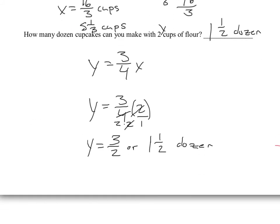The last question asks how many dozen cupcakes you can make with two cups of flour. Cups of flour is our X, so I substitute two in for X: Y equals three-fourths times two. Doing the arithmetic with some cross-canceling gives Y equal to three-halves, or one and a half dozen cupcakes.